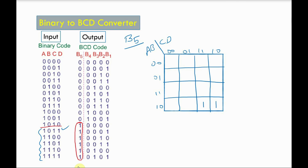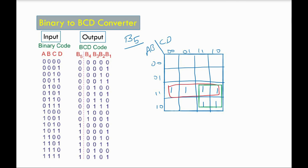The next cases are 1011, 1100, 1101, 1110 and 1111. So this is the mapping of b5 to the Kmap. Now we have to group it. We have two groups: the first group and the second group. The value of the green group is a·c and the value of the red group is a·b. So finally, b5 is equal to a·b + a·c.